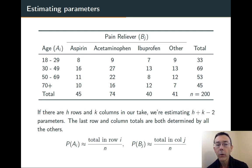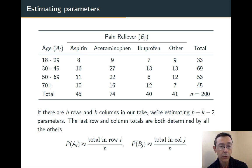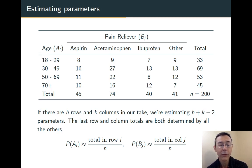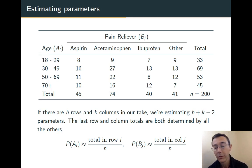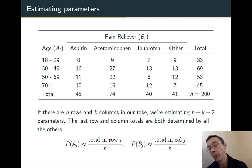Notice that the number of parameters we're estimating is one for each row and one for each column. However, if we know the probabilities for the first three columns, we can compute the probability for the fourth column, and similarly with the rows. So really, we're only estimating H plus K minus two parameters, where H is the number of rows and K is the number of columns.